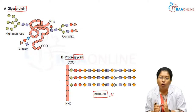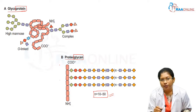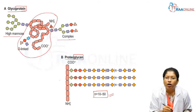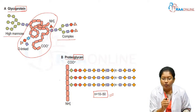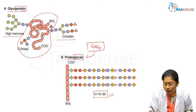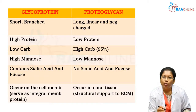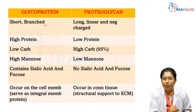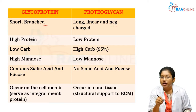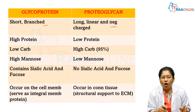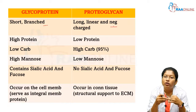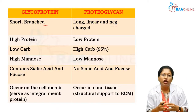In proteoglycan, carbohydrate is present in higher amounts, whereas the protein is present in little amount. In glycoprotein, the proteins are in excessive amount whereas the glucose moieties are in lesser amount. This is the difference between glycoprotein and proteoglycan. Glycosaminoglycans have proteoglycan. Glycoprotein chains are short and branched. Proteoglycan is long, linear, and mostly contains negative charges, because glycosaminoglycans contain amino sugars as well as acidic sugars, so they are negatively charged.